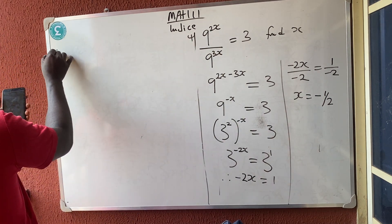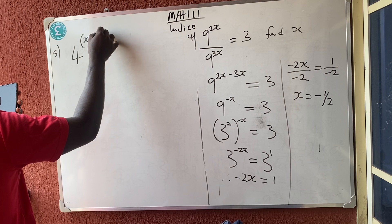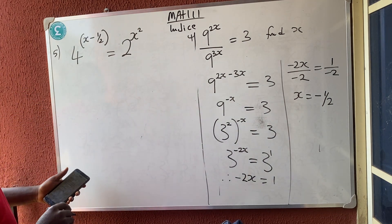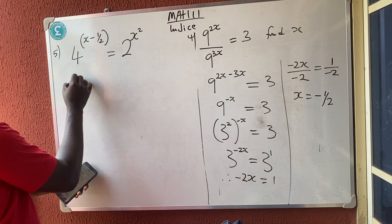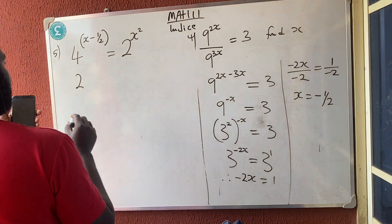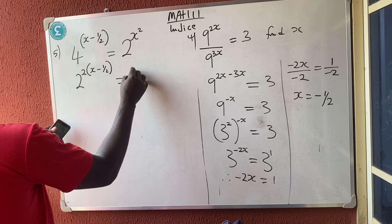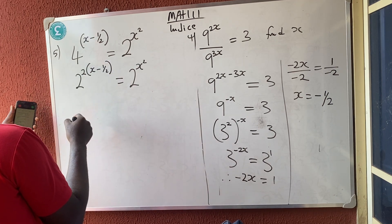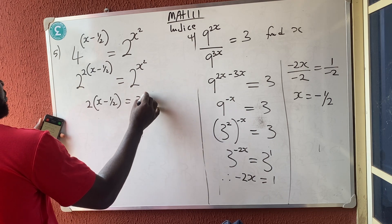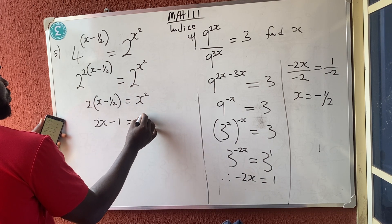This is number 5. If I have 4 raised to power x minus one over 2 — this is the power — is equal to 2 raised to power x squared. Let's reduce: 4 is 2 raised to power 2, so I have 2 raised to power 2, bracket x minus one over 2, is equal to 2 raised to power x squared. This takes care of this — I have 2 times bracket x minus one over 2 equals x squared. So 2x, and 2 cancels the two in the denominator giving minus 1, equals x squared.